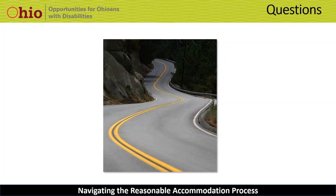Q&A: Are there any taboo questions that shouldn't be asked when finding out what reasonable accommodation is needed? When going through the reasonable accommodation process, you are trying to identify what the barrier in the workplace is — related to the medical condition — that is getting in the way of the person performing the task. Keep your questions focused on that. You only want to know as much about the disability as answers the question: what is the specific limitation related to work, and what is the solution for overcoming that? There is not a list of taboo questions, just keep it simple.